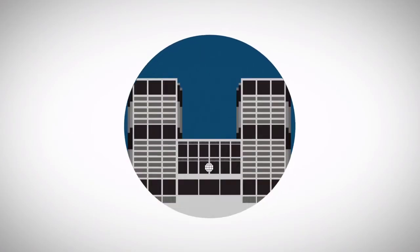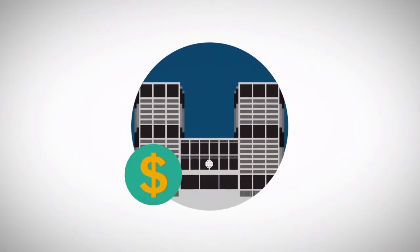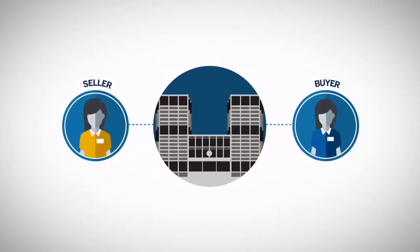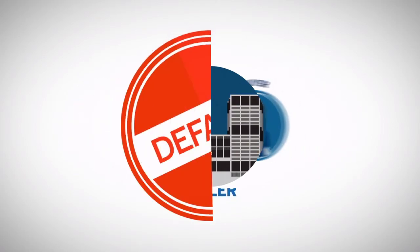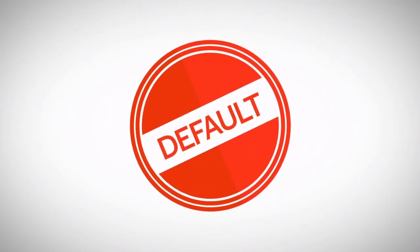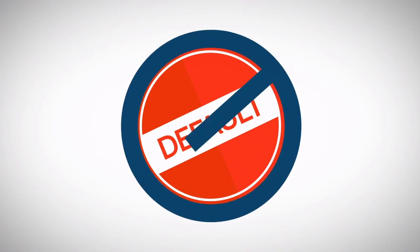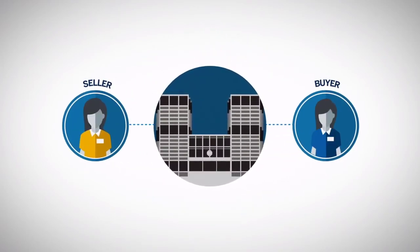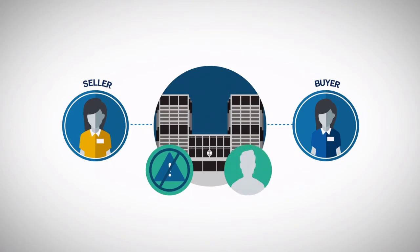Every exchange-traded futures contract is centrally cleared. This means that when a futures contract is bought or sold, the exchange becomes the buyer to every seller and the seller to every buyer. This greatly reduces the credit risk associated with the default of a single buyer or seller. The exchange thereby eliminates counterparty risk and, unlike a forward contract market, provides anonymity to futures market participants.